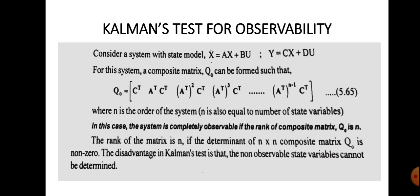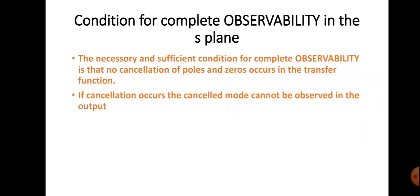Compare both cases — controllability and observability — and study them together, as it will be easier. In the s-plane, the necessary and sufficient condition for complete observability is that no cancellation of poles and zeros occurs in the transfer function. If cancellation occurs, the cancelled mode cannot be observed in the output. Problems in the next video will make these concepts clearer.